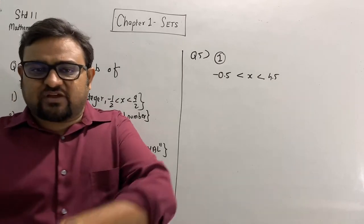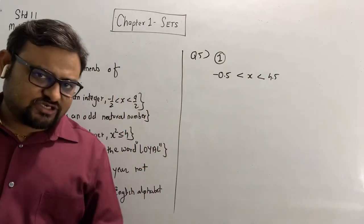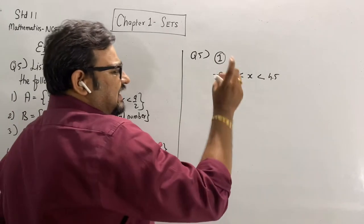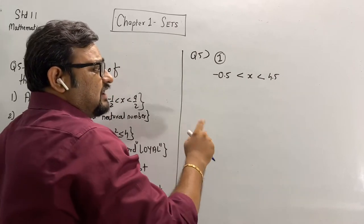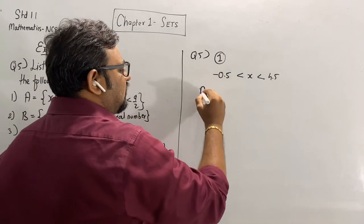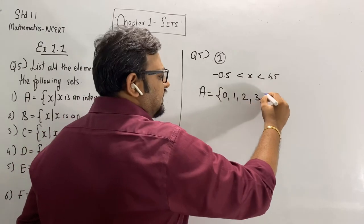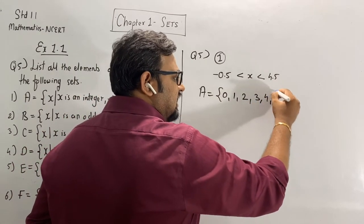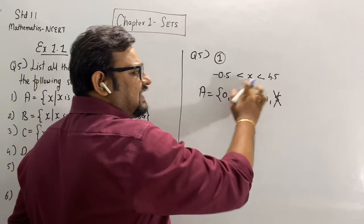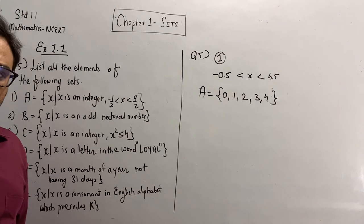My x is greater than -1/2 and less than 9/2. Minus 1/2 means -0.5, and 9/2 means 4.5. Remember, we have to take only integer values. Integers are numbers like -7, -8, -2, 0, 1, 2, 3, 4 — they have no decimal point. The integer just greater than -0.5 is 0, then 1, 2, 3, 4. Five would be greater than 4.5, but we require less than 4.5. So the answer is {0, 1, 2, 3, 4}.